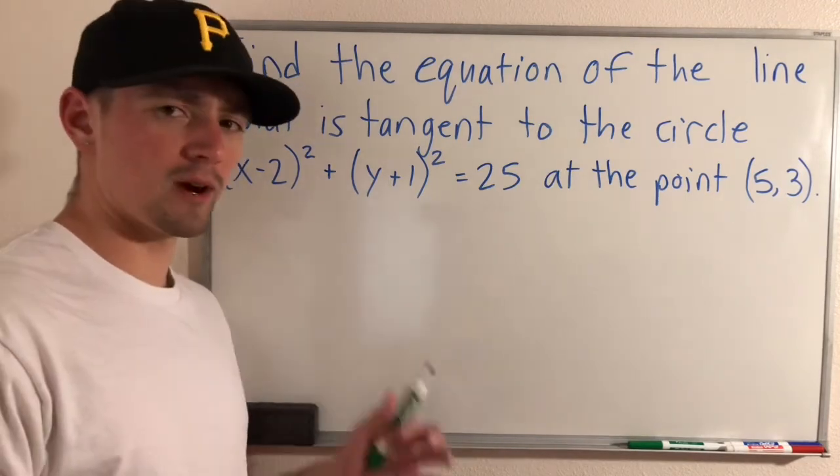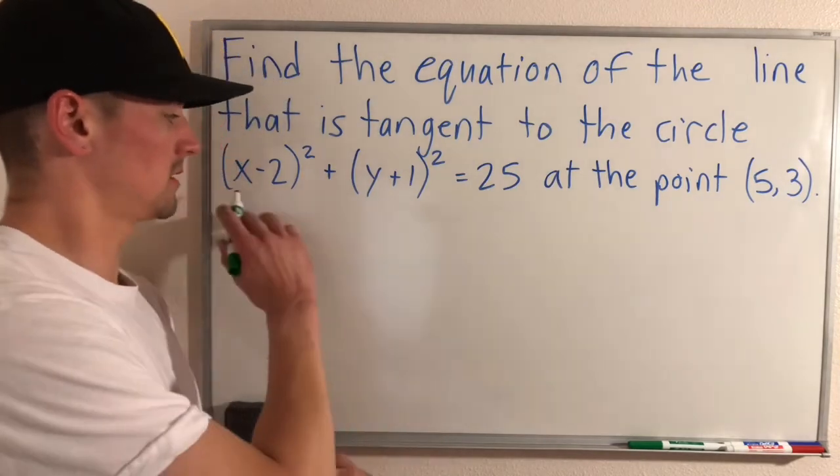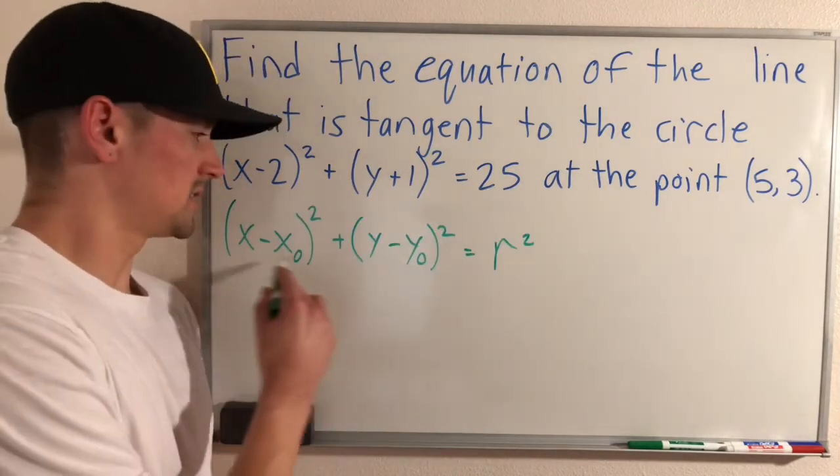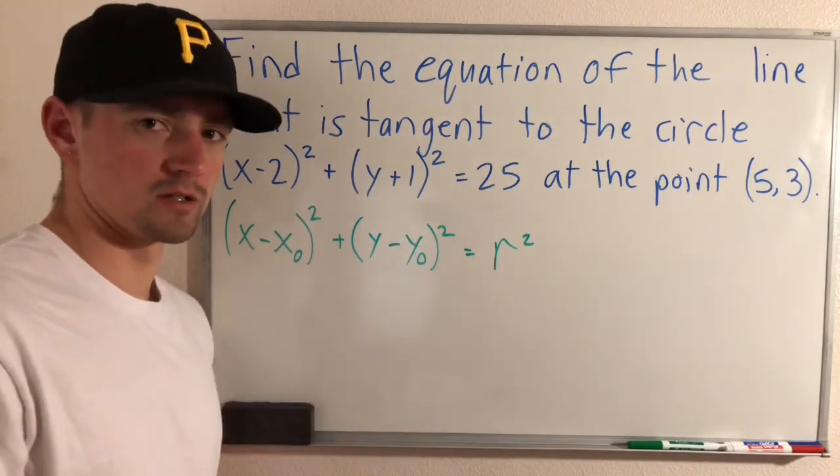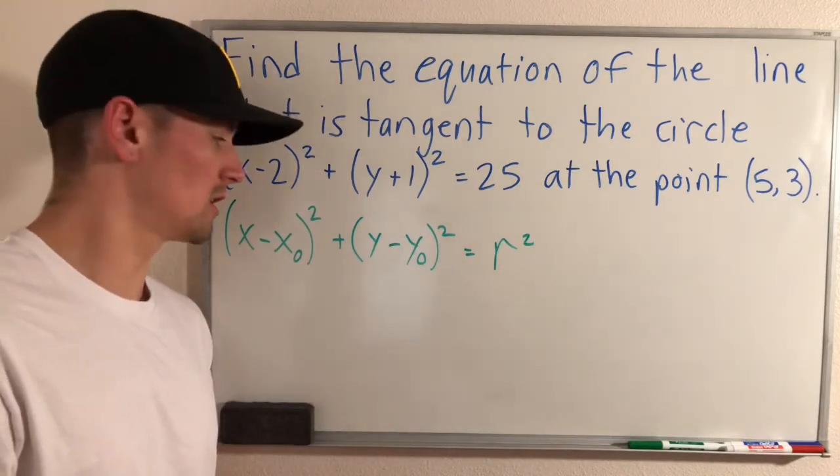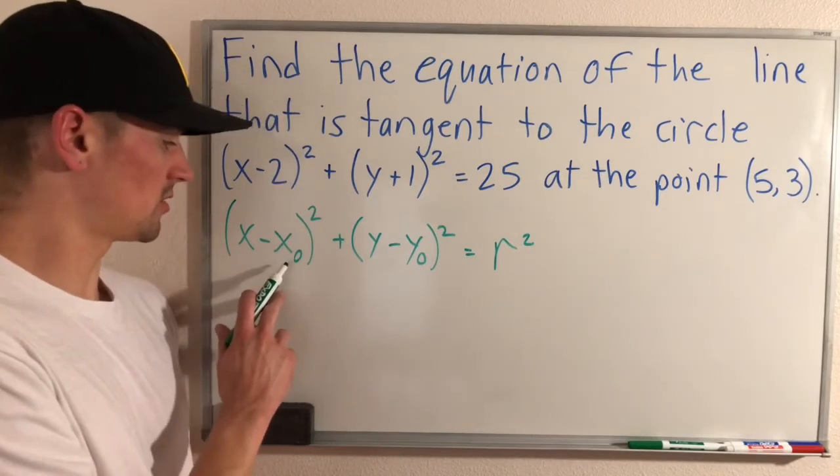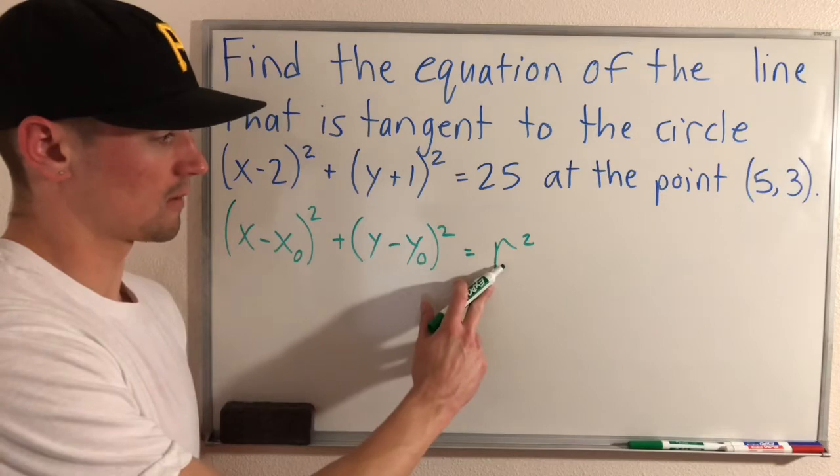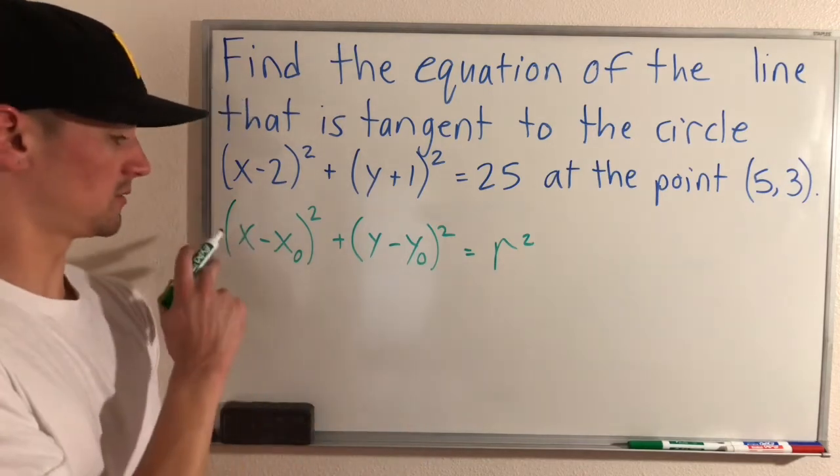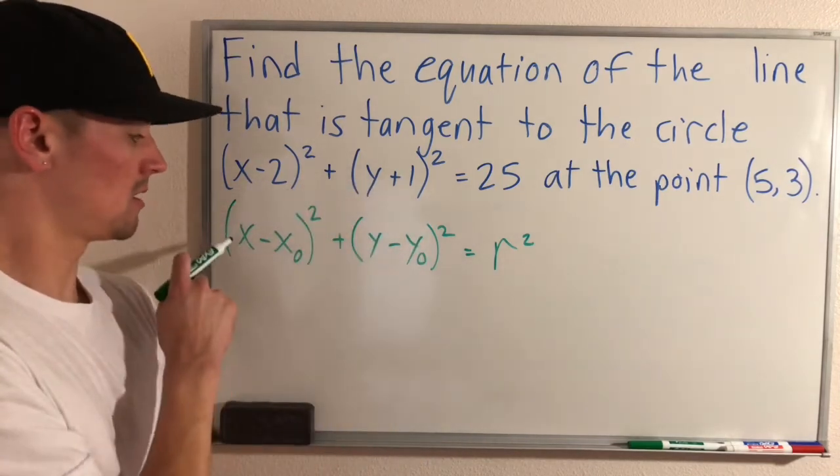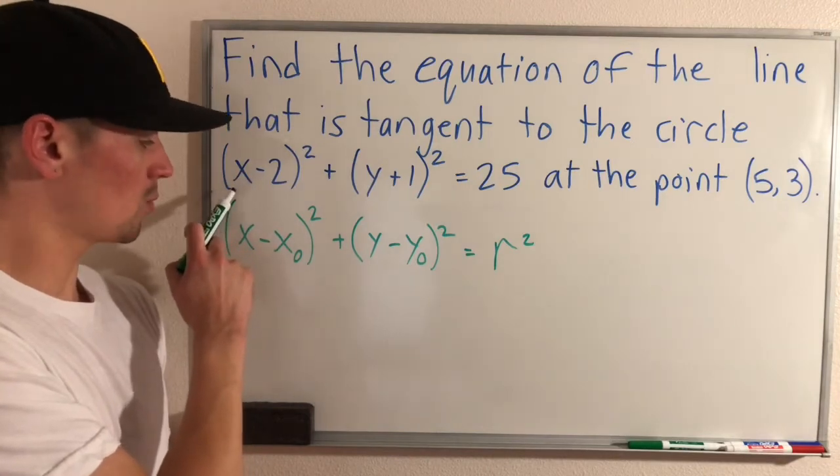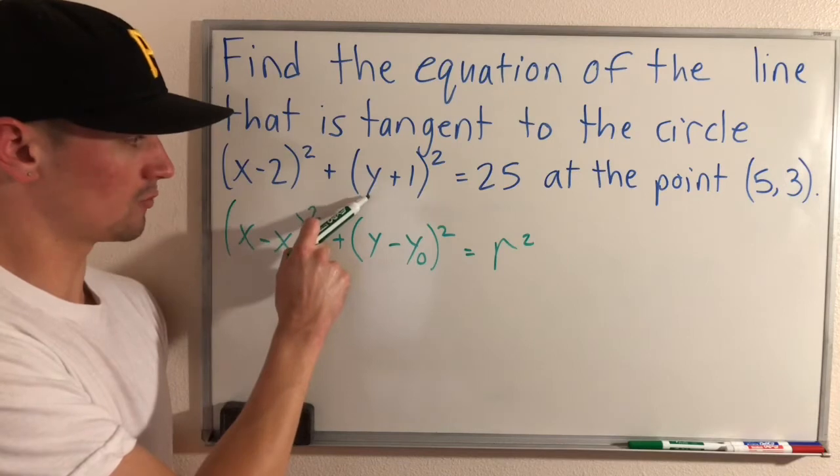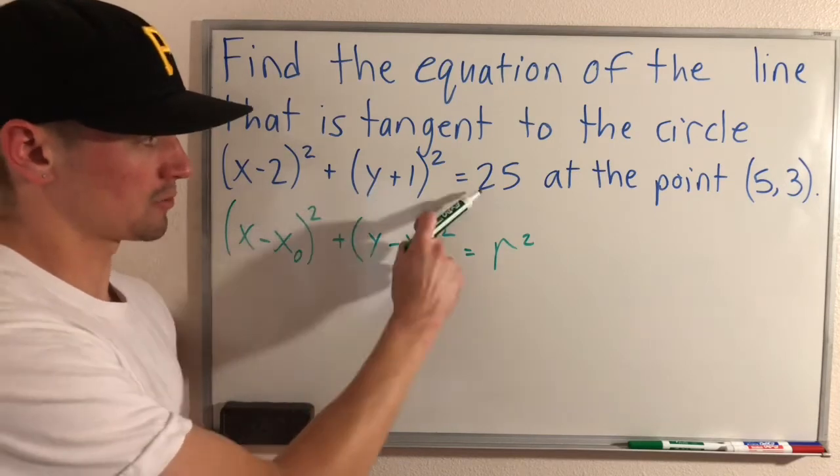Before I get into how to solve this I do just want to take a second to talk about this equation of the circle here. So in general this is the form that a circle, the equation of a circle would be written in where this circle is centered at the point (x₀, y₀) and the radius is R. So what that tells us is if we compare this to this equation here, what we have here is a circle which is centered at the point (2, -1) and has a radius of 5.